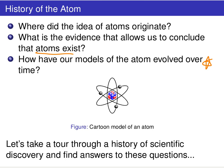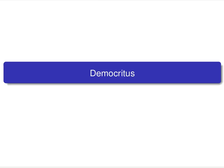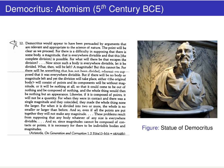Our first starting point on this tour through scientific history is going to be the early Greek philosophers. We're going to look at some of the writings and ideas of Democritus.